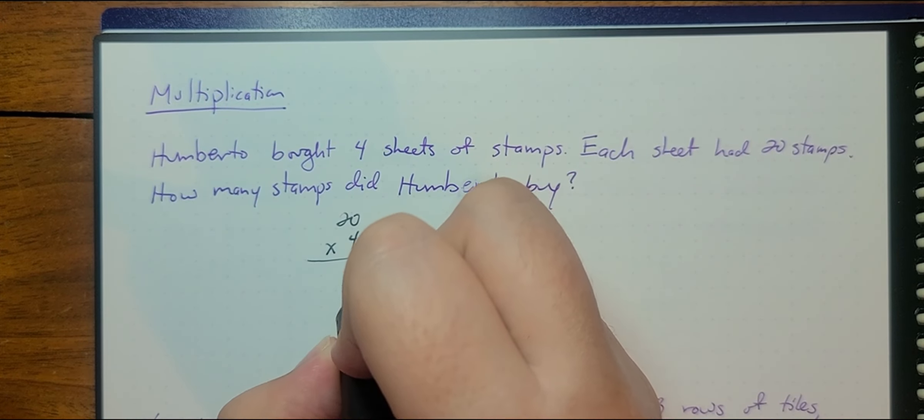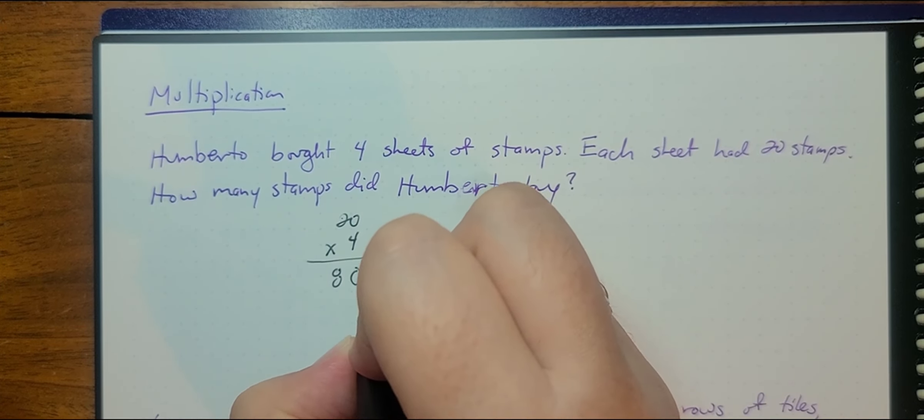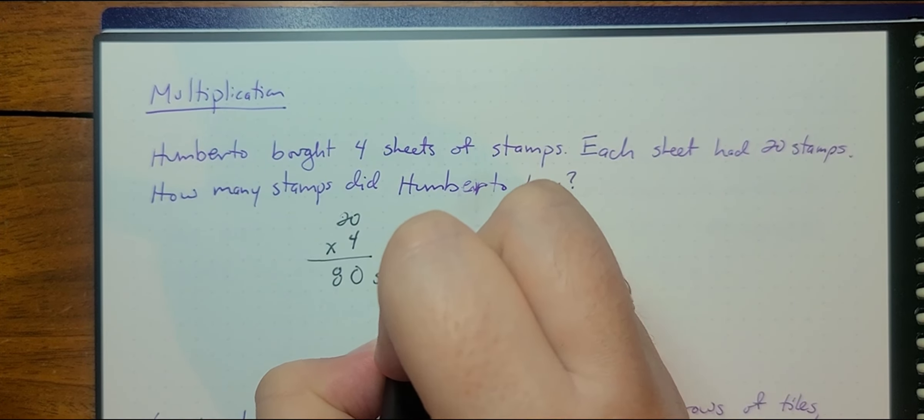So that's zero times four is zero. Two times four is eight. He's got 80 stamps.